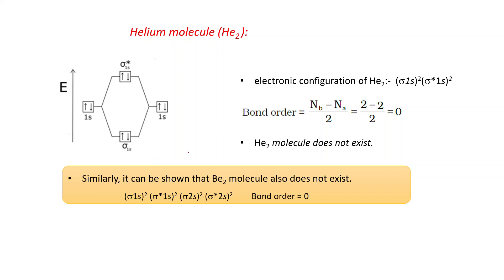Now for the helium molecule He₂: each helium atom has two electrons in the 1s atomic orbital. When the two atomic orbitals combine, two molecular orbitals are produced: sigma 1s and sigma star 1s. The electronic configuration is sigma 1s² sigma star 1s². Bond order = (2 − 2) / 2 = 0, which means He₂ does not exist.